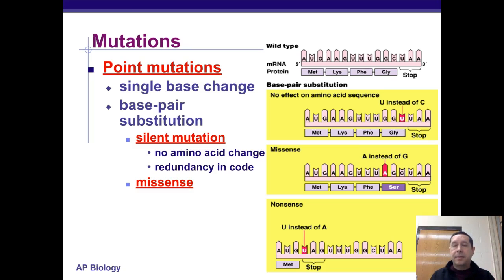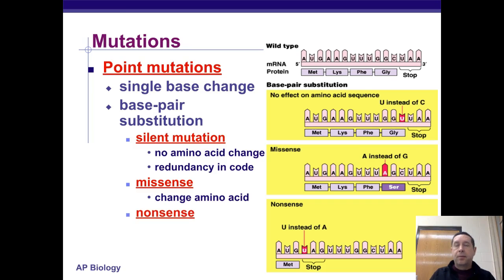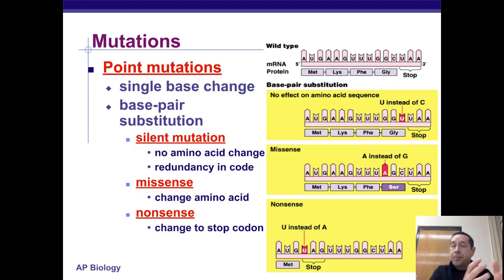A missense mutation is where you change the amino acid that's produced in one spot, but all the other amino acids are correct, so the protein probably works okay but maybe has a few issues. A nonsense mutation changes a coding codon to a stop codon, so the protein stops being produced at that point, which usually produces a non-functional protein.